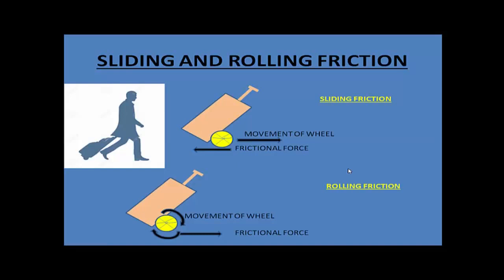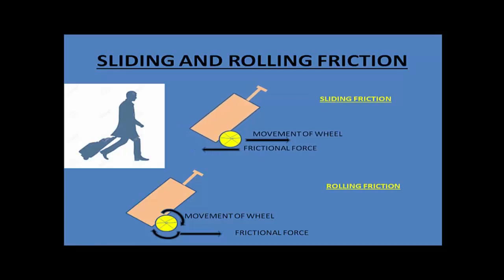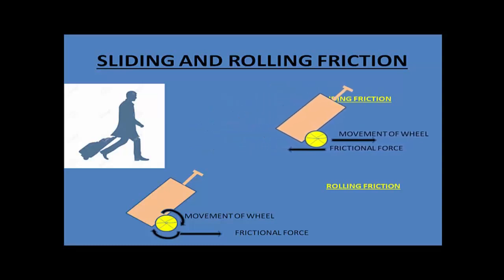Let us take another common example — suitcases with wheels. Suppose the wheels on your suitcase are jammed and do not move. You will have to drag the suitcase. The suitcase will move very slowly because the jammed wheels mean you have to slide the suitcase over the ground. The movement is towards the right, while the sliding friction acts in the opposite direction and is much larger, so you have to push or pull very hard.